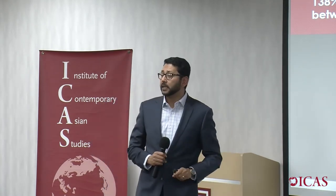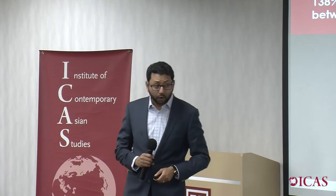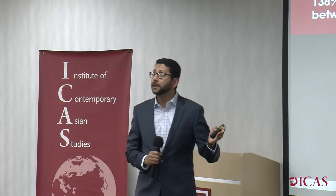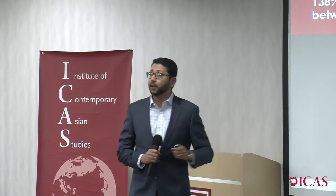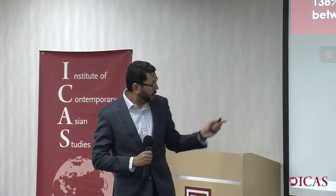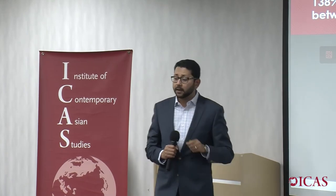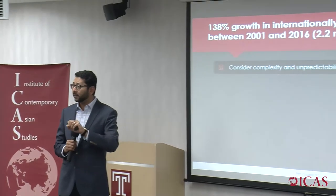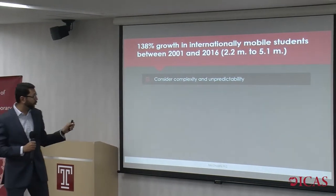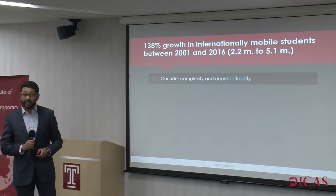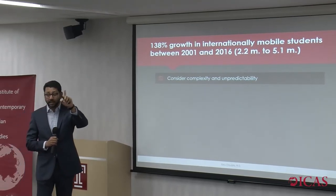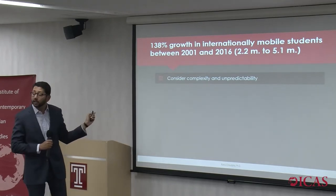The headline number: we hear that student mobility is increasing — 138% growth, from 2.2 million to 5.1 million mobile students. That's a dramatic increase. But my core argument is that this number is missing a lot of nuances. It's missing the complexity and unpredictability of student mobility — who is going where and why. The overall direction may be up, but where students are going and where they're coming from is really changing.